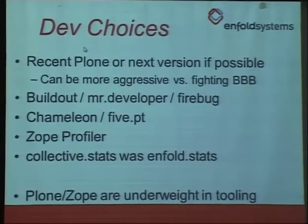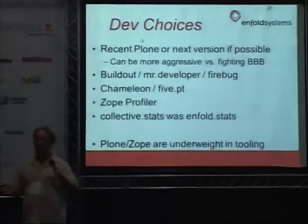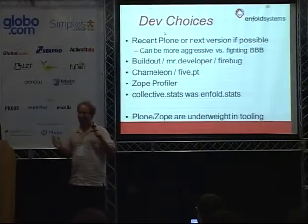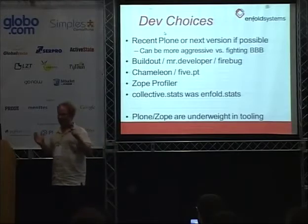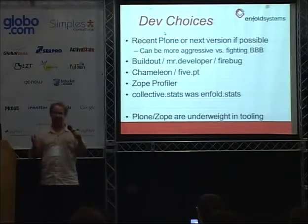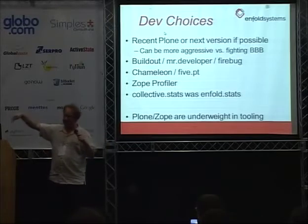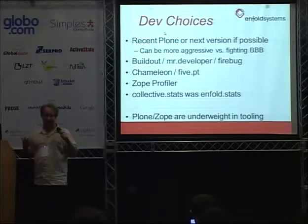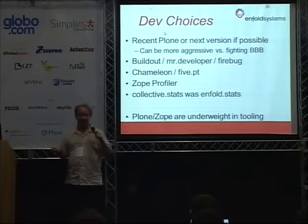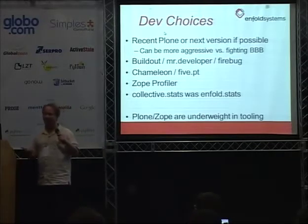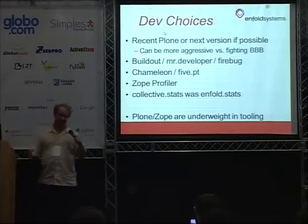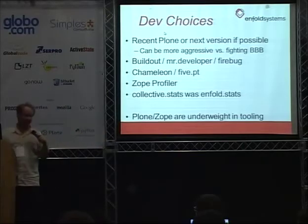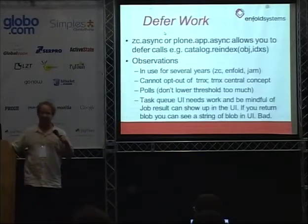Timelines are compressed. You have to roll out production stuff, and you simply don't have the time to learn about the behavior of the product in production — it has to be done way before. One of the big problems with Zope and Plone specifically is our tooling is very underweight. We're really underweight in tooling, and this is a problem maybe with Python in general, but it's a problem nonetheless. Tooling is a very important thing for everyone to think about.